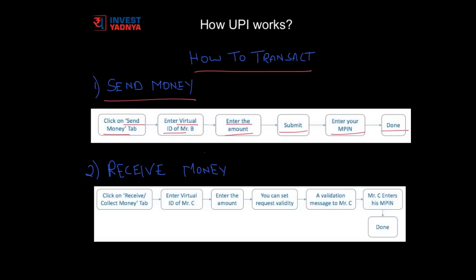Now we will discuss how to receive money using UPI. You need to click on the 'Receive' or 'Collect Money' tab on your app. Enter the virtual ID of Mr. C, the person whom you want to receive money from. Enter the amount you want to receive and you can also set a request validity time — for example, you can specify that the request is valid for 24 hours, 48 hours, or until a specific date. A validation message will go to Mr. C immediately. Mr. C has to validate it and enter his MPIN, and the transaction is done and you will receive the money immediately.